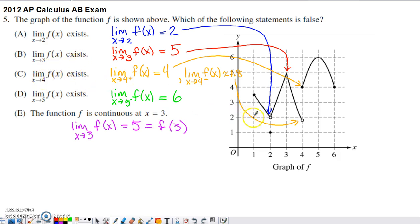Choice C: the limit as we approach 4 exists. Let's check each side of 4. On the left side of 4, we approach the open circle down here with a y-value slightly below 2, so we get a limit of about 1.8. On the right side of 4, we get a limit of about 4.